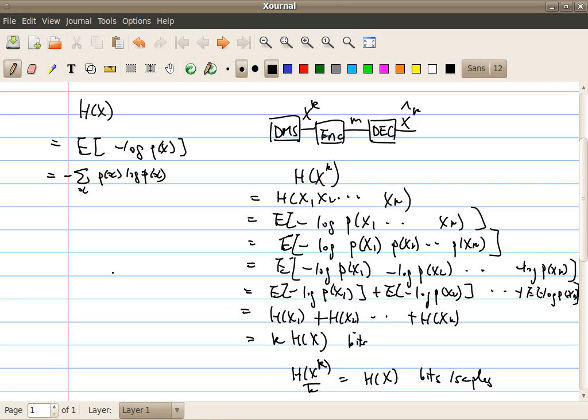So it's like we have this discrete memoryless source. We first argue that the amount of information is equivalent to H(x). Actually, at the beginning, we kind of argue that by hand waving.